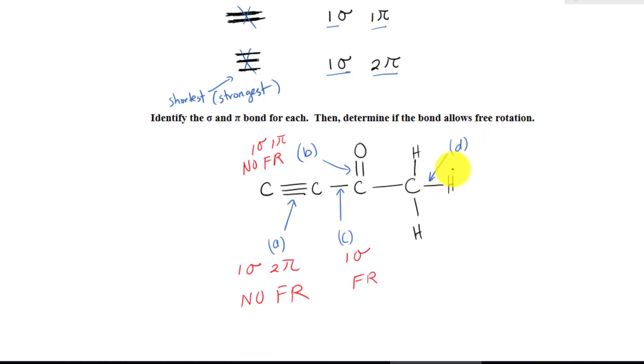And lastly, we have D over here. It is a single bond, so it's one sigma bond. And of course, it has free rotation. Isn't that easy? And that's the concept of the types of bonds.